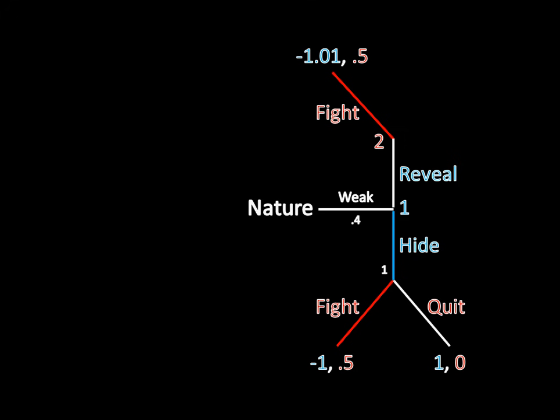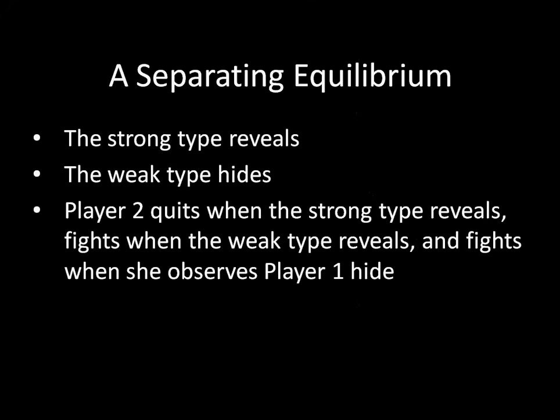So what that means is that we found a separating equilibrium. In that separating equilibrium, the strong type reveals the information. The weak type hides it. Player 2 quits when the strong type reveals. Fights when the weak type reveals. And fights when she observes Player 1 hide.